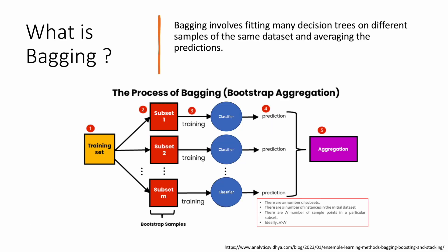So what is bagging? Bagging is made of two words: bootstrap and aggregation. 'B' from bootstrap and 'AGG' from aggregation — so bagging = bootstrap aggregation.